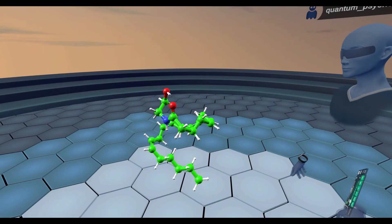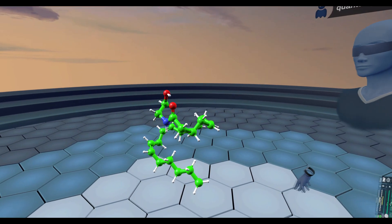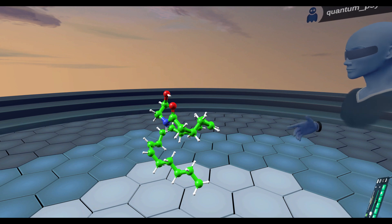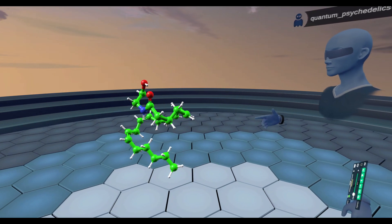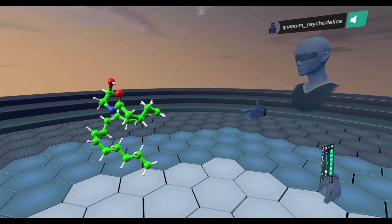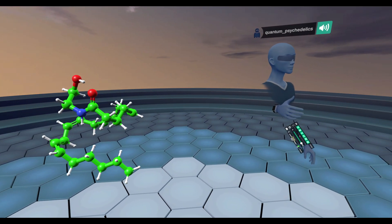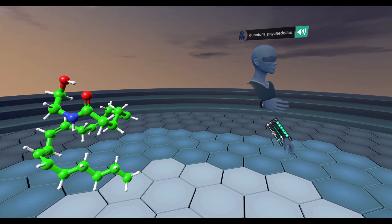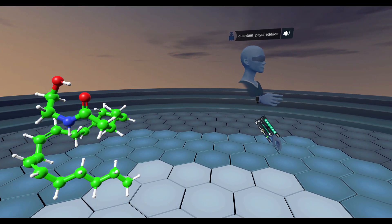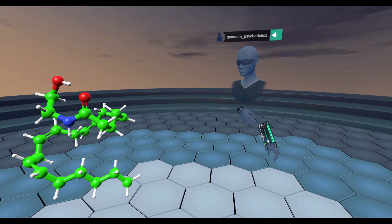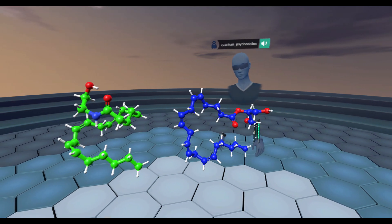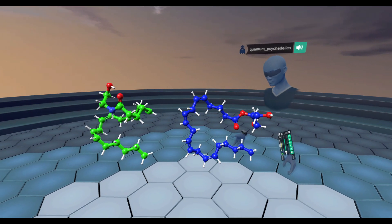This receptor binds to and activates to mediate its effects. The other endogenous ligand is 2-AG or 2-arachidonylglycerol. Now that we have both molecules next to each other, we can compare and contrast them.